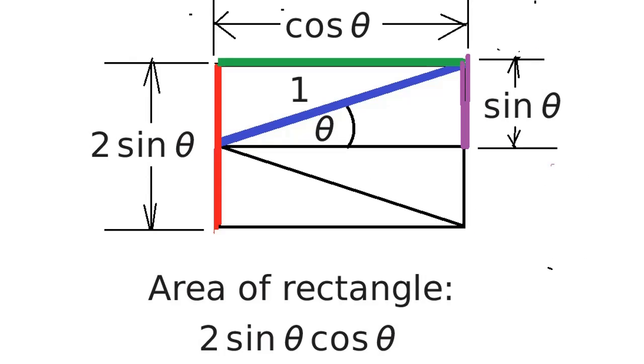We'll say that the diagonals each have a length of one. We now have a scale by which to measure the side lengths. The height of the rectangle is two sine theta, and the width is cosine theta.